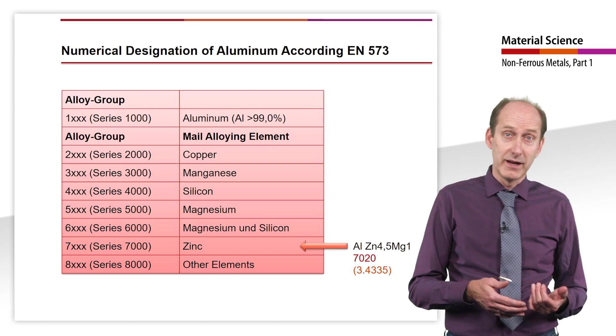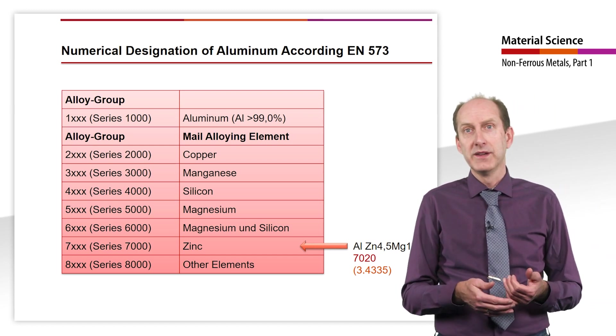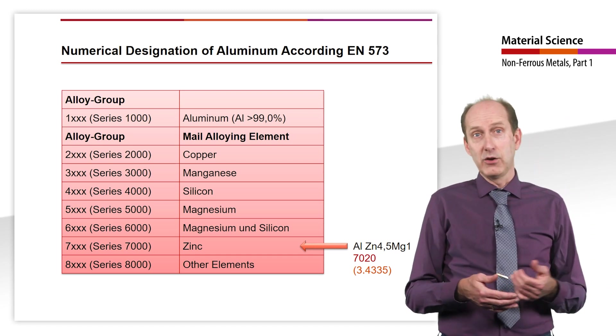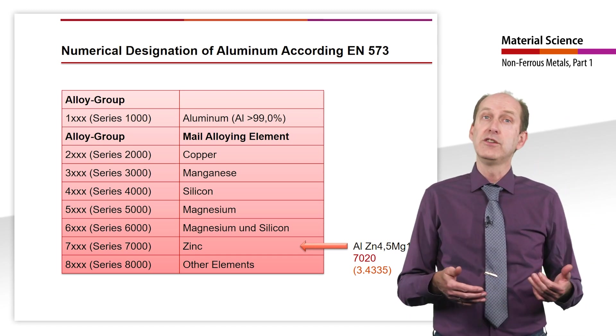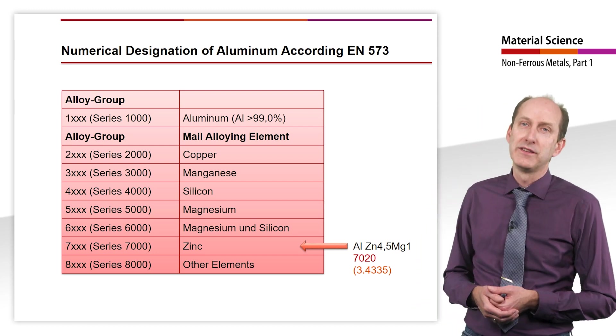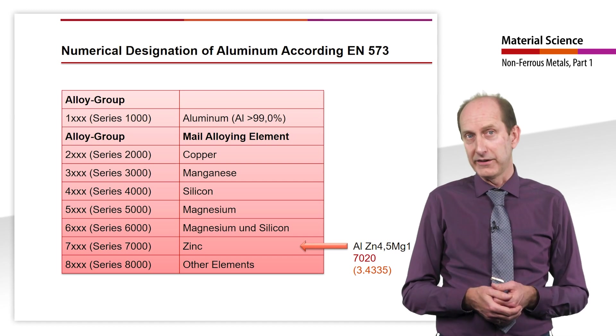In the alloy groups of the 2000 to 8000 series, the last two digits of the designation have no special meaning. They serve only to designate the various aluminum alloys in the alloy group. Thus, our example AlZn4.5Mg1 is an aluminum alloy with zinc as the main alloying element and thus falls into the 7000 series. The exact number is 7020, according to the standard.